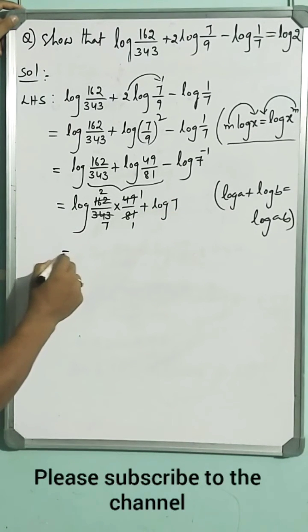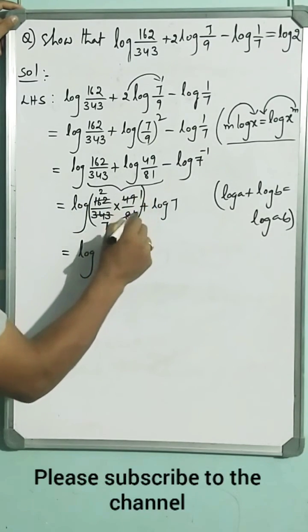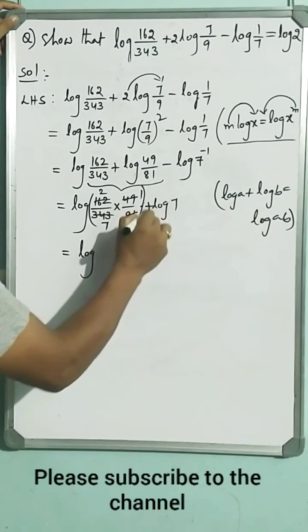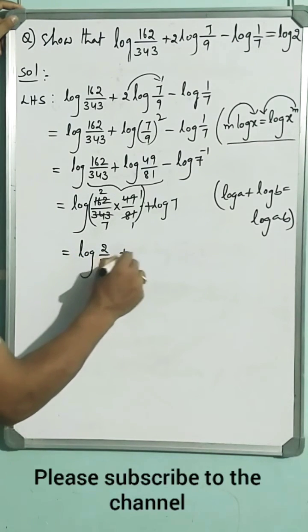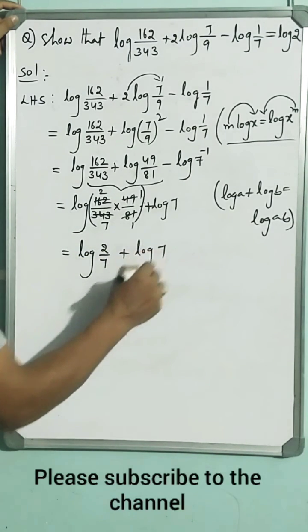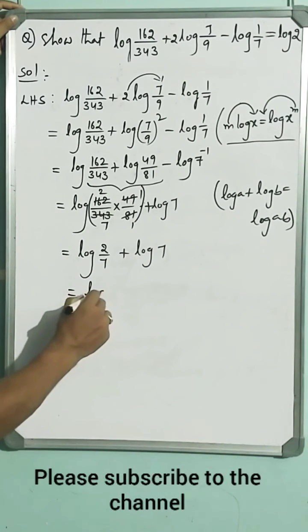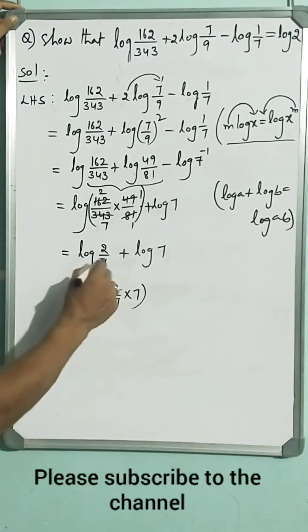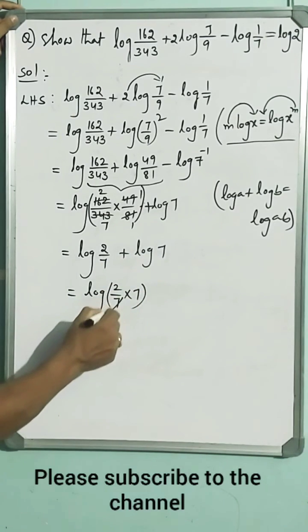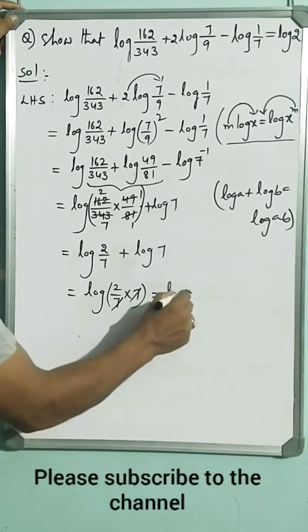This has become log 2 by 7 plus log 7. Again using the same law: log 2 by 7 into 7. Log A plus log B can be written as log AB. This equals log 2.